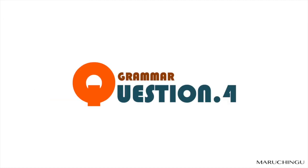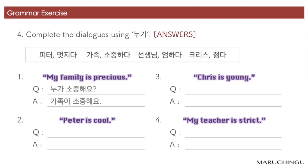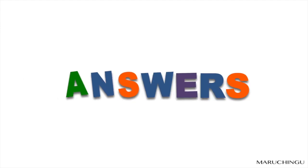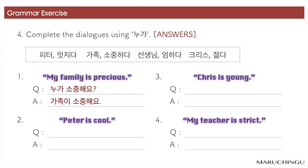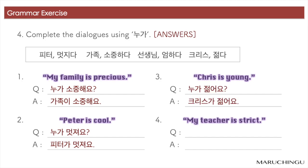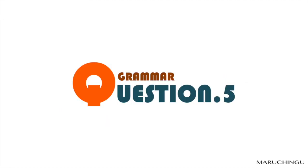Question 4: Complete the dialogue using 누가. 1번. 누가 소중해요? 가족이 소중해요. 2번. 누가 멋져요? 피터가 멋져요. 3번. 누가 젊어요? 크리스가 젊어요. 4번. 누가 엄해요? 선생님이 엄해요.